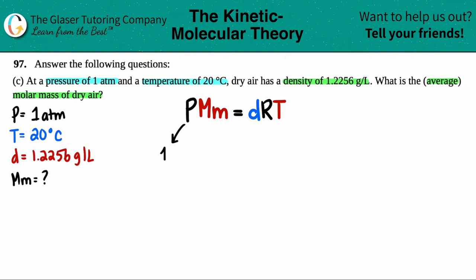The pressure we just said was 1 atm, so that's awesome. We're looking for the molar mass, so that's going to be labeled as x. The density they told us was 1.2256 grams per liter, and that's the correct units for this equation.